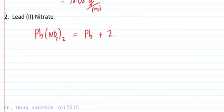One lead, two nitrogens. We multiply through the parentheses: 2 times 1 for nitrogen, 2 times 3 for oxygen is 6 oxygen atoms per formula unit.